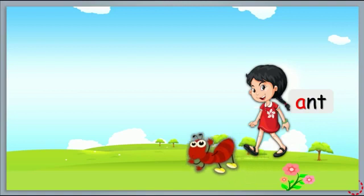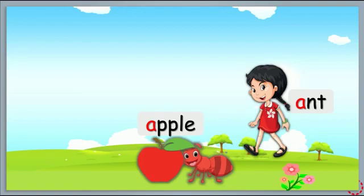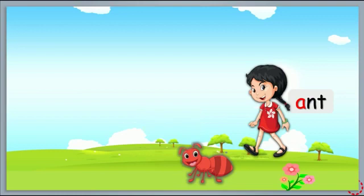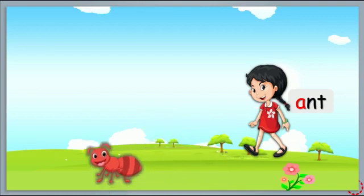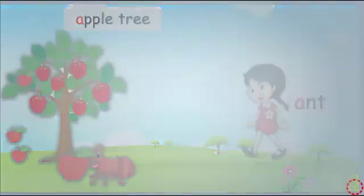The ant is very sad because the ant is very hungry. The ant is walking and says ah, ah, ah. But suddenly the ant finds a big apple. Oh! The ant is very happy now. The ant likes apple, so the ant eats the apple and walks and finds a big apple tree. There are so many apples on the apple tree!